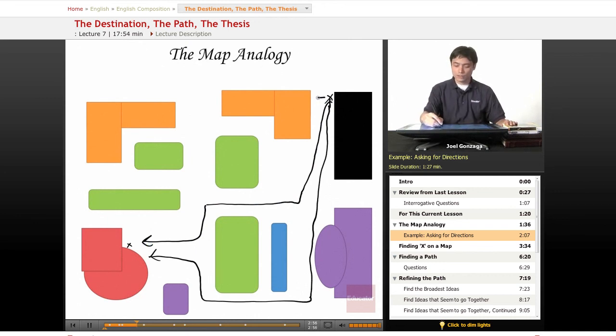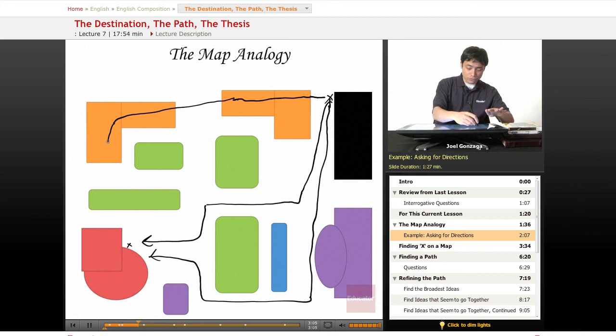Another student might say, 'Okay, what you need to do is you need to climb on top of the girls dormitory, find one of the hang gliders up there, fly over to the boys dormitory, parachute down, and then dig a tunnel underneath the lawn. And then once you've done that, you'll come out in front of the library.'